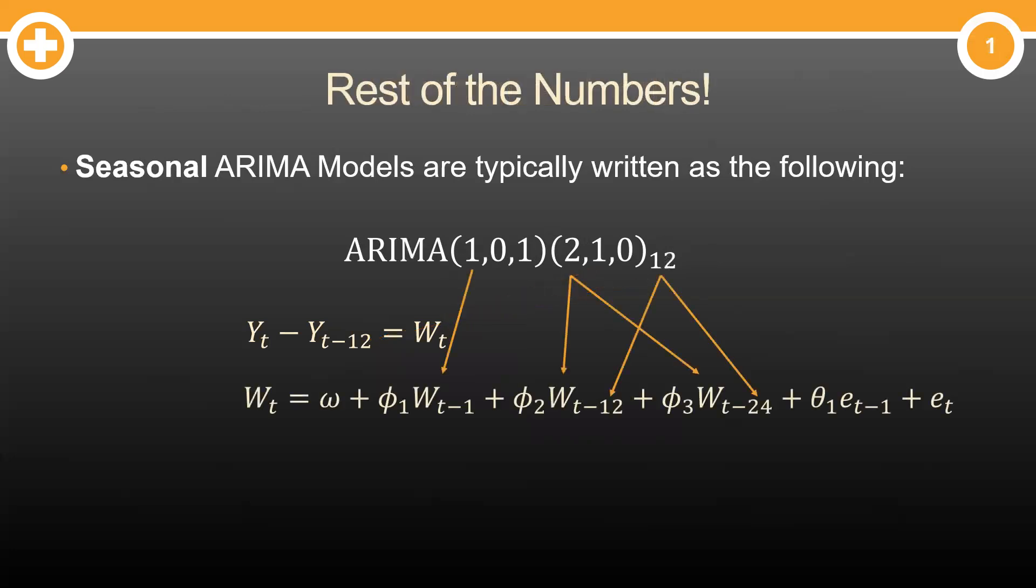Time for the rest of the model. Let's start with all the AR pieces first. One little p, so we have a single lag of W_t with W_t minus 1. We also have two seasonal lags of W_t, big P of 2. So we have a lag at T minus 12 and T minus 24 because our season is 12. See what I did there?